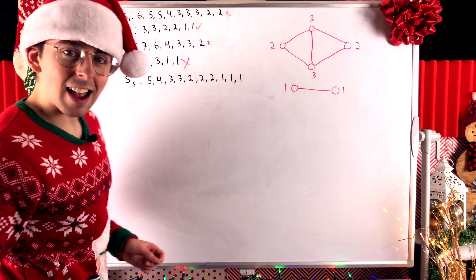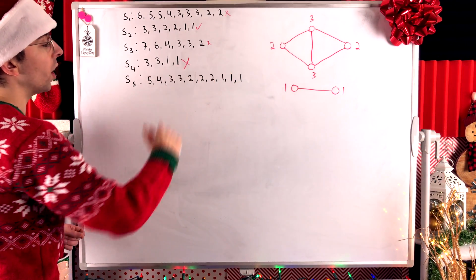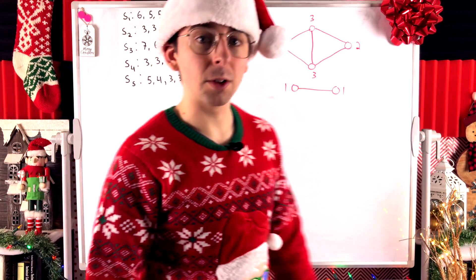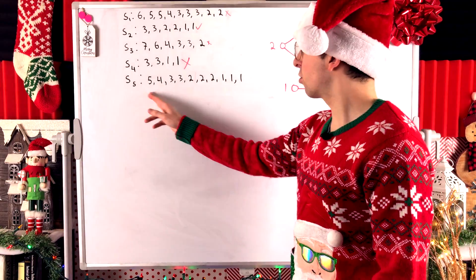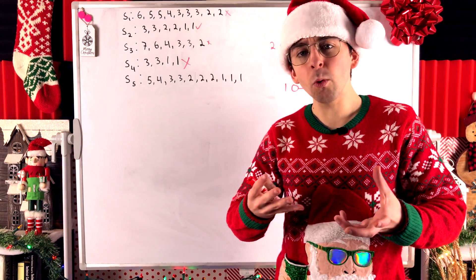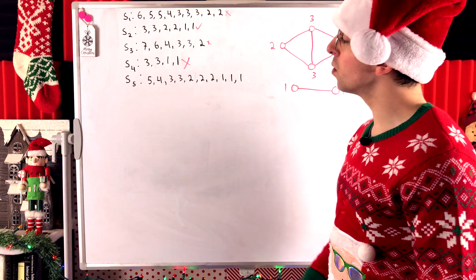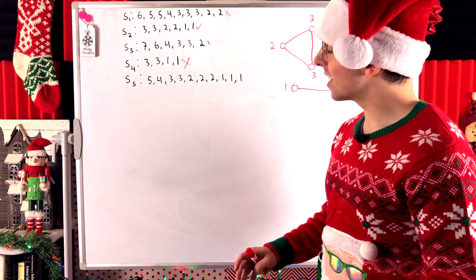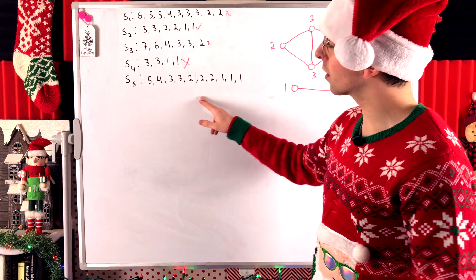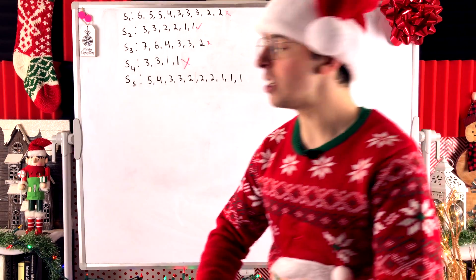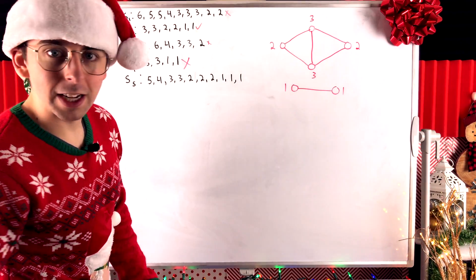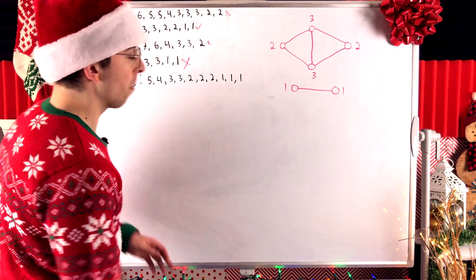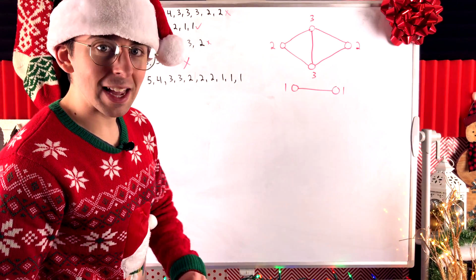For our last sequence, S5 = 5, 4, 3, 3, 2, 2, 2, 1, 1, 1. You can apply the basic checks and see that this sequence passes them all, but it's long and constructing the graph seems tricky. Let's use a theorem — which we haven't proven yet — that provides a foolproof method to check whether a sequence is graphical. The theorem tells us whether a sequence is graphical based on whether another derived sequence is graphical, and it requires the sequence to be non-increasing.